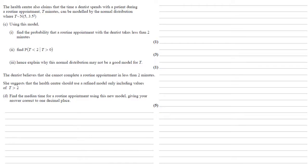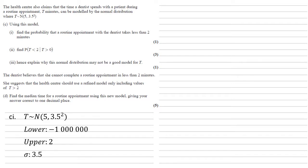The health centre also claims that the time a dentist spends with a patient during a routine appointment, t minutes, can be modelled by a normal distribution with mean 5 and variance 3.5 squared. For Part C, using this model we need to find the probability that a routine appointment takes less than 2 minutes. Using the normal distribution calculator with a lower limit of minus a million, upper limit of 2, standard deviation 3.5, and mean 5, we get P(T < 2) = 0.1956.